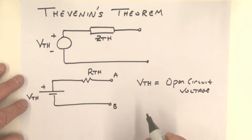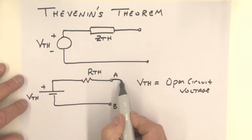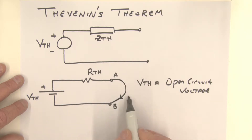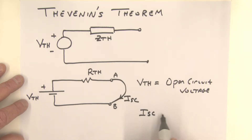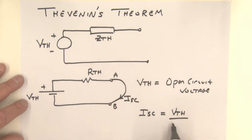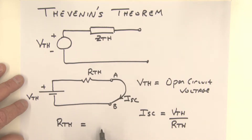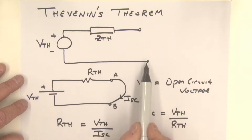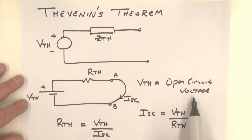A way to calculate R-Thevenin is to first calculate the short circuit current — put a short between terminals A and B and calculate that short circuit current. That short circuit current is simply equal to the Thevenin voltage divided by the Thevenin resistance, R-Thevenin. Therefore, R-Thevenin equals the Thevenin voltage divided by the short circuit current. So the method is: calculate the open circuit voltage, calculate the short circuit current, then divide.